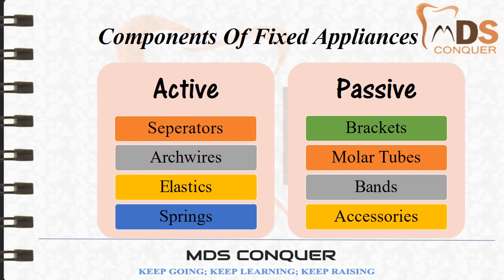The components of fixed orthodontic appliances consist of active and passive components. Active components include separators, arch wires, elastics, and springs, whereas passive components are brackets, molar tubes, bands, and other accessories.